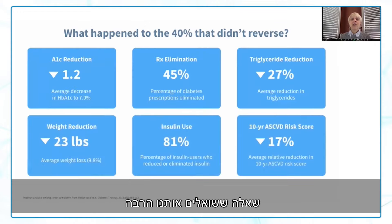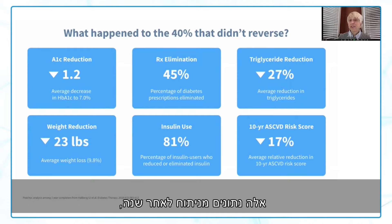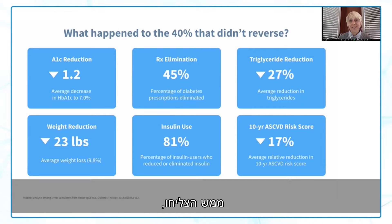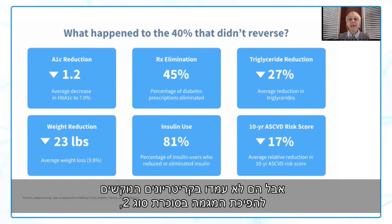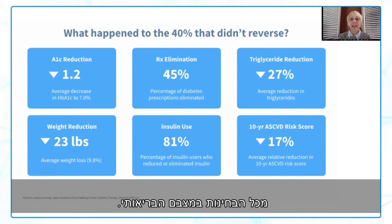A question we get a lot is what happened to the 40% of patients who didn't reverse. A post hoc analysis of our one-year data shows these patients were hardly unsuccessful — they just didn't meet the strict criteria for type 2 diabetes reversal. They still had significant improvements across the board in their health.